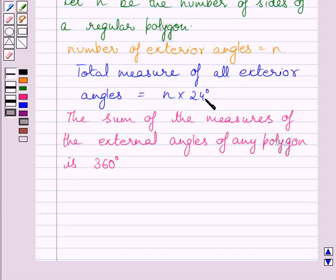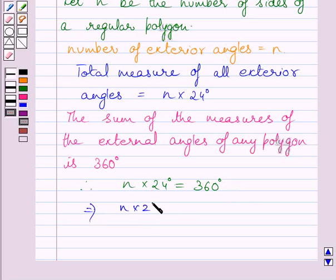These two statements help us to conclude that N multiplied by 24 degrees is equal to 360 degrees. We get N multiplied by 24 degrees upon 24 degrees is equal to 360 degrees upon 24 degrees.